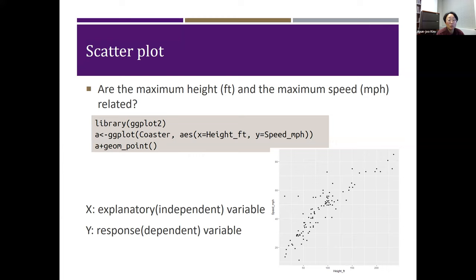In other cases, we will be simply interested in the relationship between X and Y. Notice in the AES, in the ggplot command, that we put maximum height as X and the maximum speed as Y.